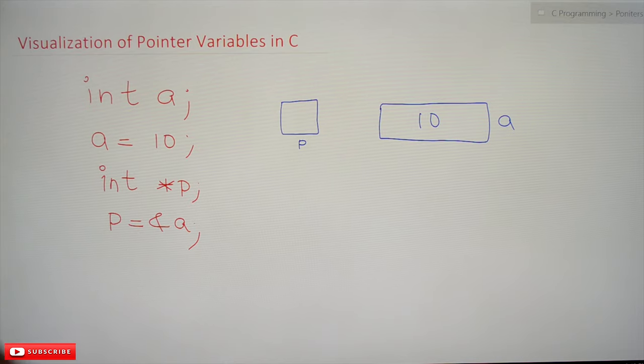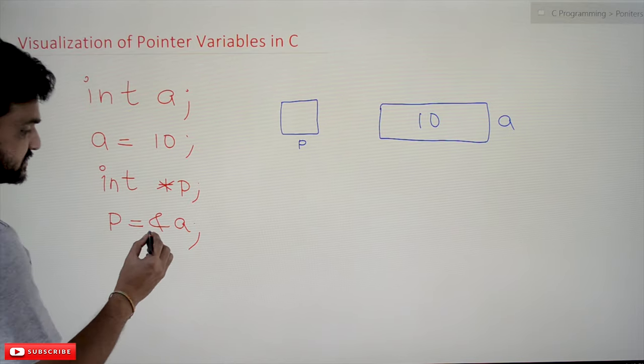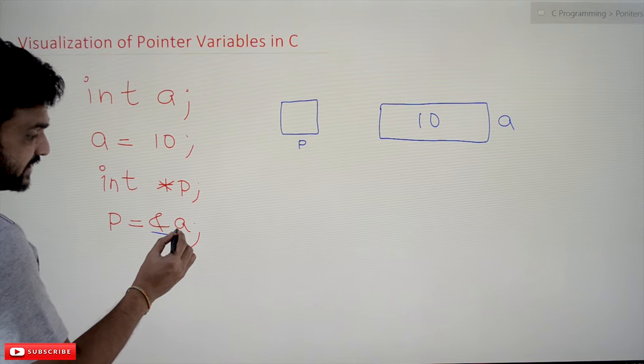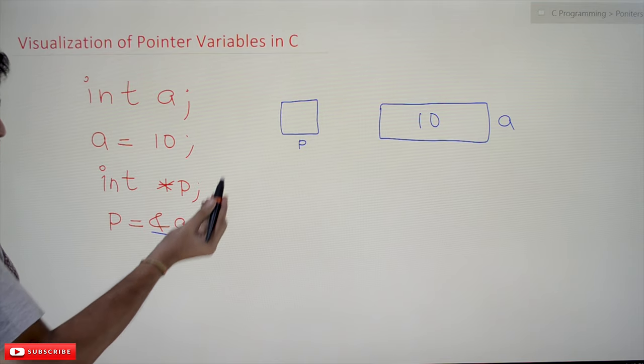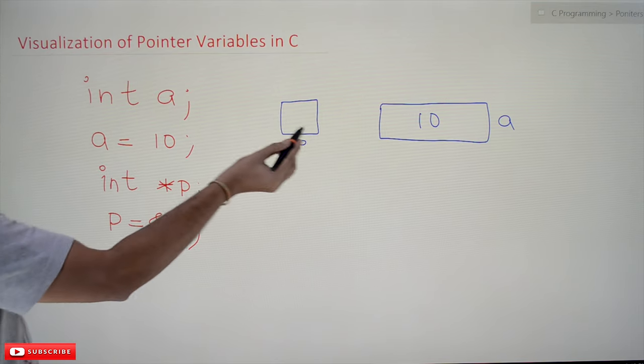Next is p equals ampersand a. As we have already discussed, this is the address of a. Let's assume that the address of a is getting stored in p.